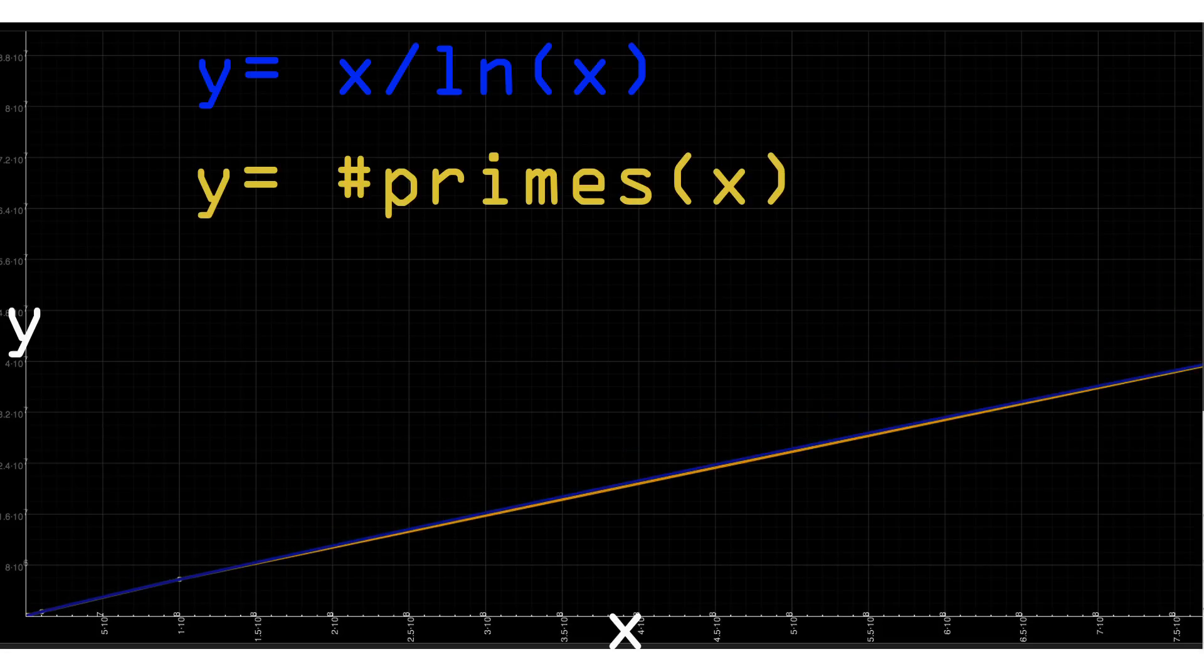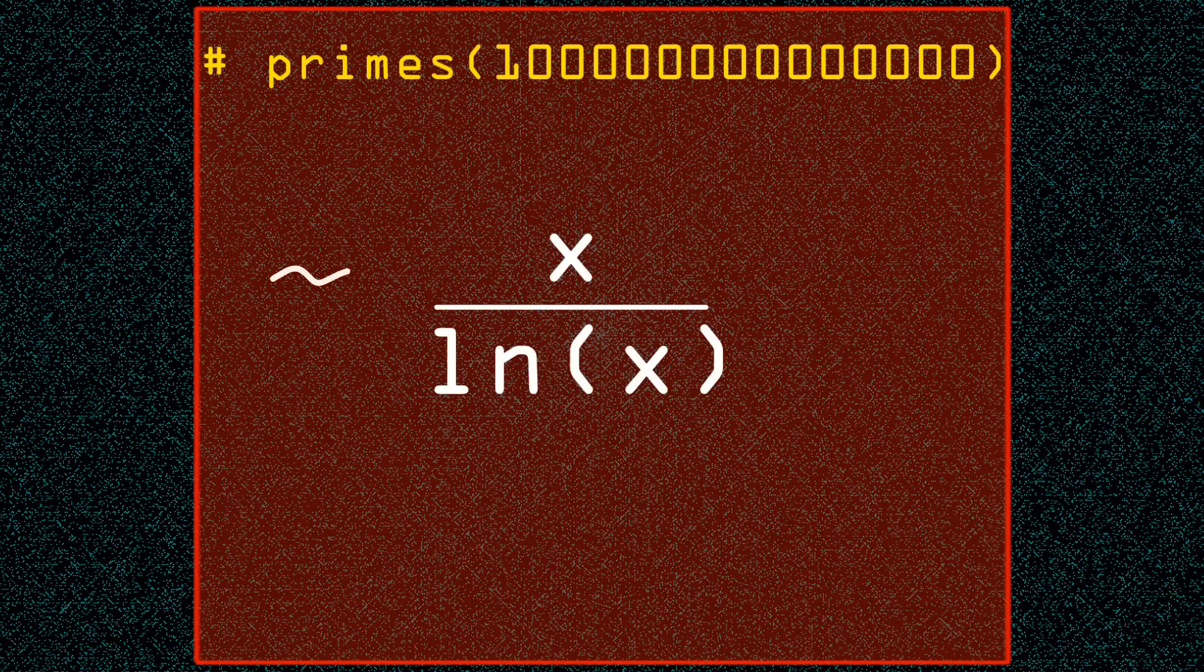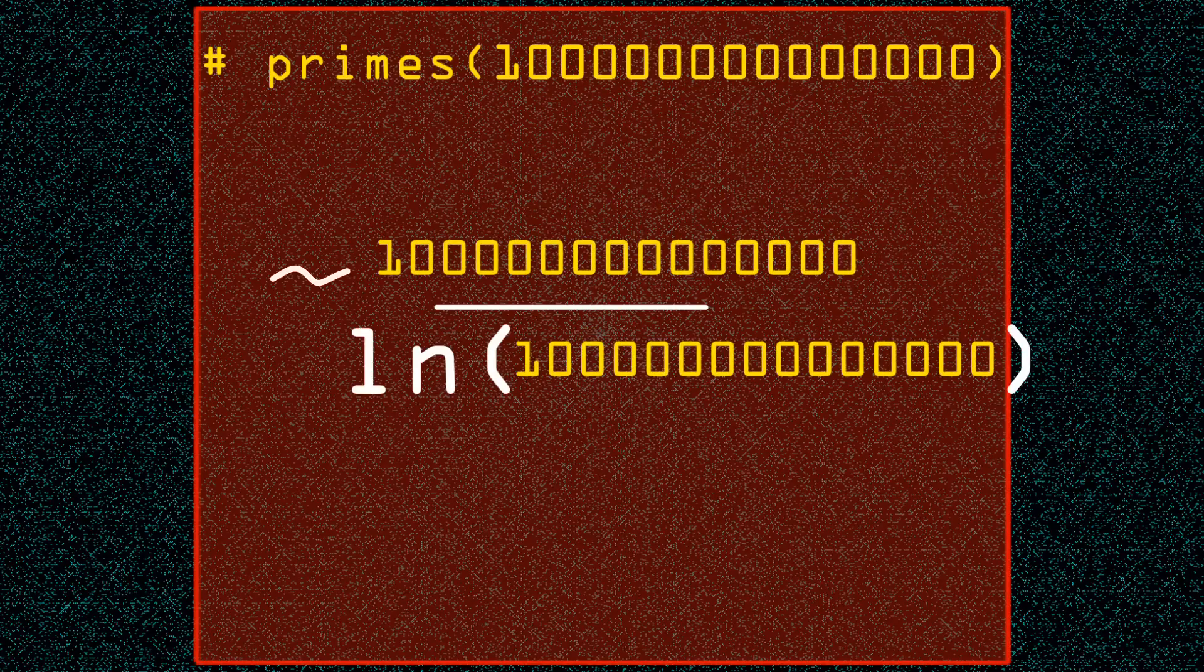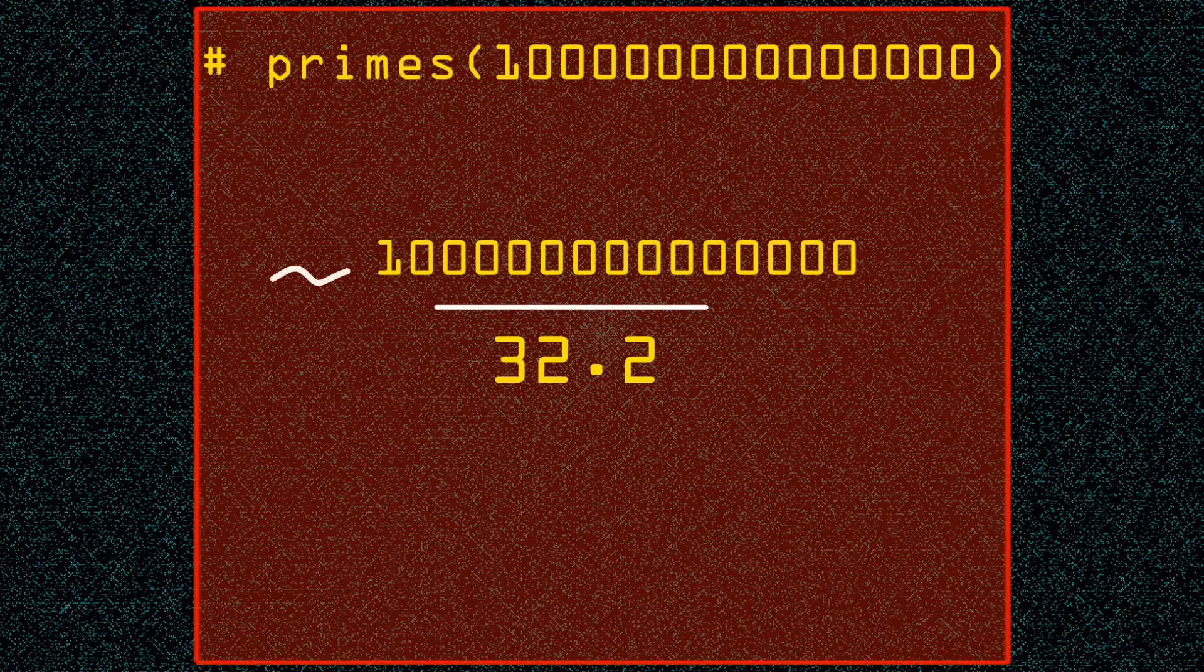And that is it. We have a formula which tells us approximately how many primes there are up to any value, no counting needed. For example, let's say we need to know the number of primes less than 100 trillion. 100 trillion divided by the natural log of 100 trillion equals 3.1 trillion.